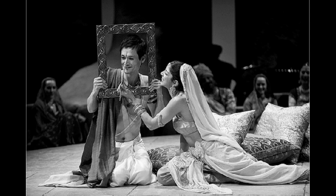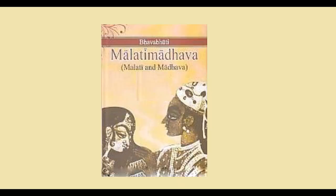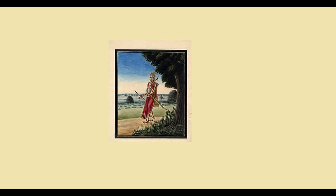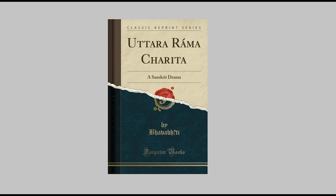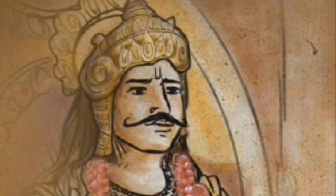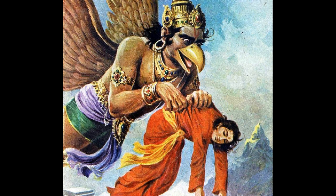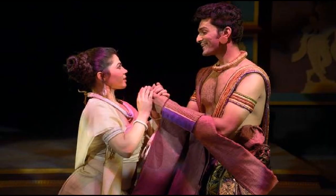Mrichhakatika is the story of a romance between a young man called Charudatta and a beautiful courtesan, Vasanta Sena. Another important dramatist of ancient India is Bhavabhuti, whose most important plays are Malati Madhava, Mahaviracharita, and Uttararamacharita. Then we have Harsha Vardana, the powerful emperor who ruled in north and northwestern India, who wrote three plays: the comedy Ratnavali, Priyadarshika, and the Buddhist drama Nagananda.